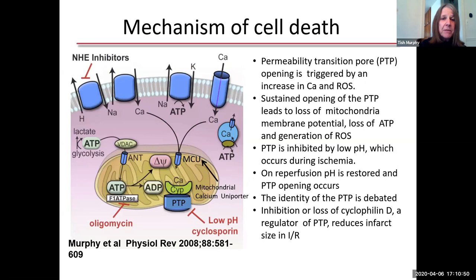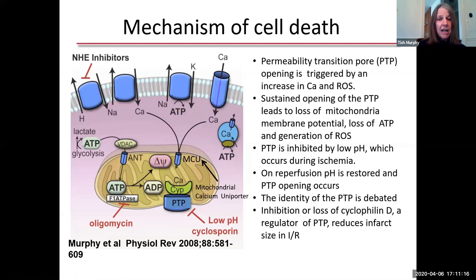Since we're still debating what the PTP is, my lab has focused on understanding how cyclophilin D, which is an activator of the permeability transition pore, works. It's fairly well agreed that cyclophilin D activates the PTP. Experiments where it was knocked out genetically reduced ischemia reperfusion injury. There are also inhibitors such as cyclosporine A, which inhibit cyclophilin D and are cardioprotective in animal studies. However, we don't know how cyclophilin D activates the permeability transition pore — whether calcium and ROS activate it through cyclophilin D is largely unknown.